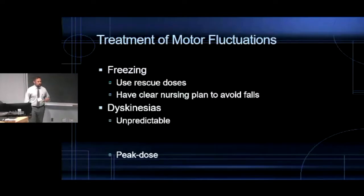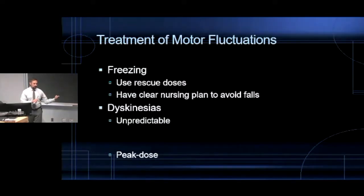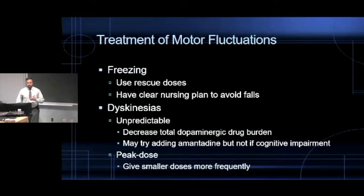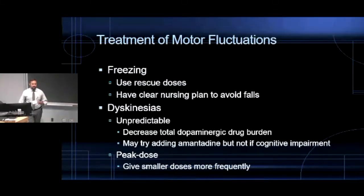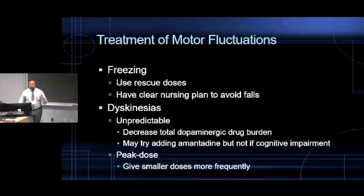Dyskinesia refers to involuntary twisting, writhing movements normally seen in the limbs and the head. Dyskinesias are a symptom of too much levodopa in your system. As the disease progresses, the therapeutic window narrows, and some patients are either off or having dyskinesias with nothing in between. If the dyskinesias are unpredictable, decrease the total burden of dopaminergic drugs, knowing you may worsen freezing and tremor. You can try adding amantadine, but be very careful because it can cause cognitive impairment in a population already at high risk. Peak dose dyskinesias occur predictably after medication — give smaller doses spread out more closely to avoid peaks and valleys.